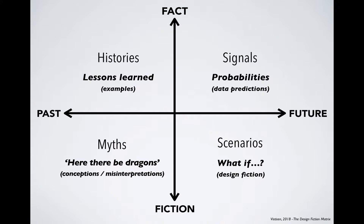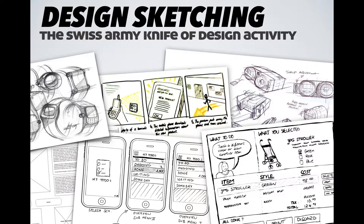Some of you may have already looked into using the design fiction matrix to use lessons learned, state of the art, probability, data, or misconceptions uncovered from user studies to begin proposing what-if scenarios. Once those are checked off, we ask: how do we represent these what-if scenarios? As I've briefly discussed in another video, one common thing in design is that whenever we have a what-if question, we rapidly turn to sketching — traditional pen and paper design sketching — basically doodling out our ideas.